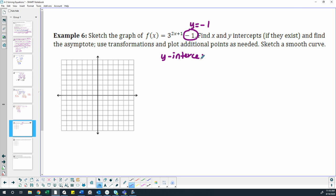For the y-intercept, we let x equal 0. That gives us 3 to the 2 times 0 plus 1, which is basically just 3 to the first power, which is 3. So that gives us a point at 0, 3.